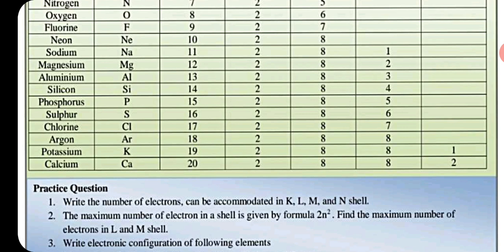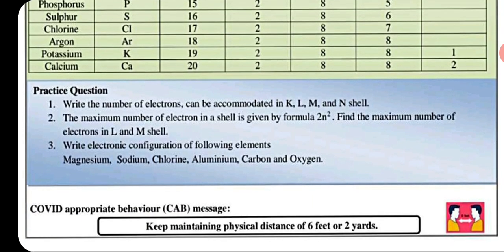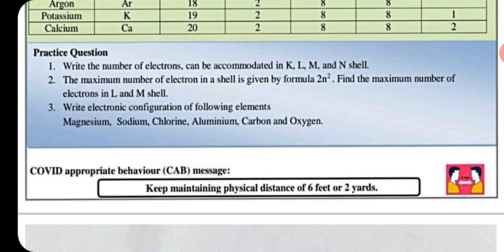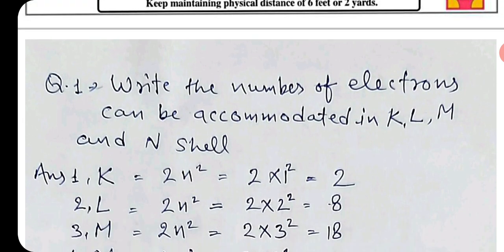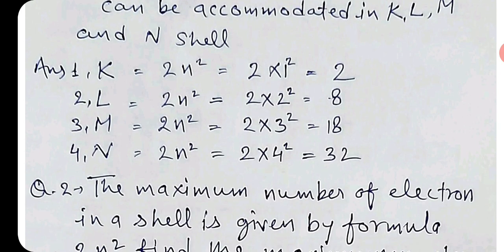तो इस तरह number बताएं, maximum बताएंगे कि third shell maximum 18 आ सकते हैं, लेकिन जो है कमी रह सकते हैं। आप जिसके पास कम है electrons तो उसके shell में कम होंगे electrons, ठीक है। यह आप देख सकते हैं कि इसमें configuration पूछा जा सकता है, number of electrons.